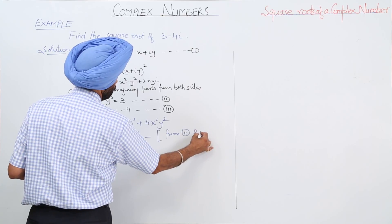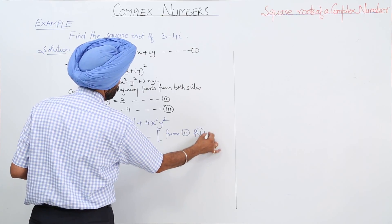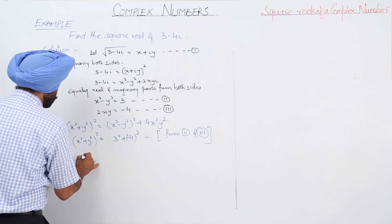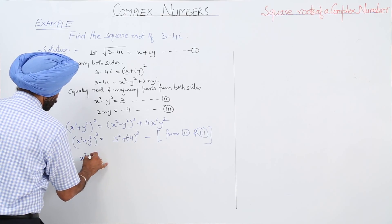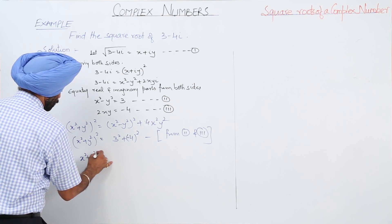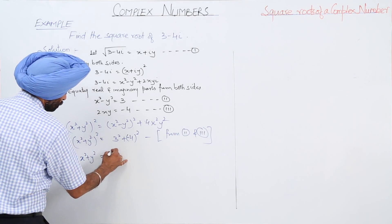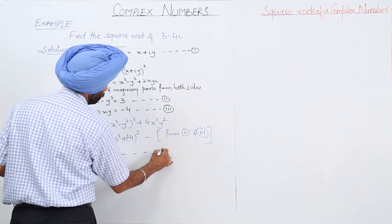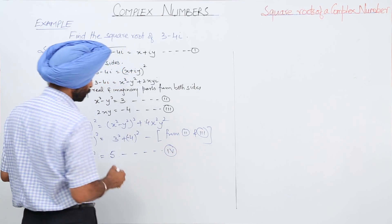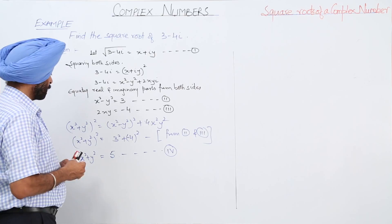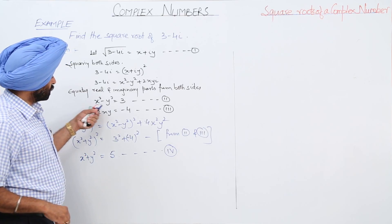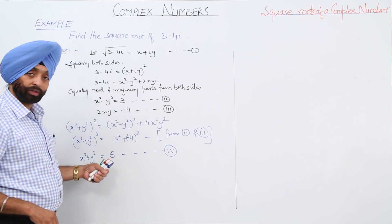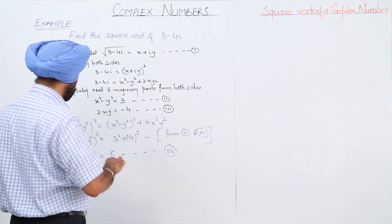From equations 2 and 3, we get x squared plus y squared, whole squared, is equal to 25, so x squared plus y squared is equal to 5 — equation 4. We now have x squared minus y squared is equal to 3 (equation 2) and x squared plus y squared is equal to 5 (equation 4).